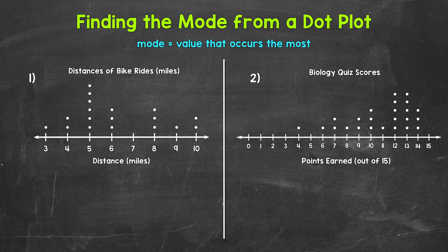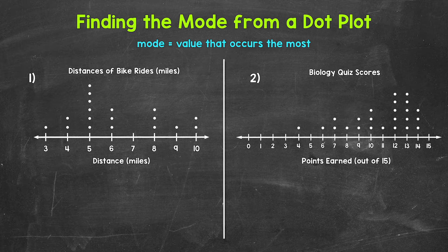Let's jump into our examples, starting with number one, where we have a dot plot displaying data about bike ride distances. A person tracked the distance of their bike rides for a month. Here are the results. So which distance, which value occurred the most? All we need to do here for this dot plot is look for which value has the most dots above it.